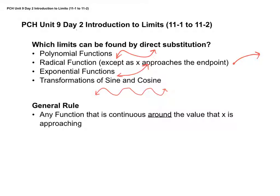A continuous function is one that doesn't have any holes or asymptotes. In other words, you could draw the entire thing without lifting your pencil. That's a simplistic definition, but if I can draw the whole graph without having to pick up my pencil and jump to a different point, then I have a continuous function.